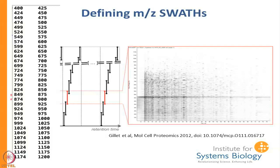This depicts in time versus M/Z space the fragment ions coming from just one swath. These are not the precursors even though the upper end of the range is the same — these are the fragment ions, and the fragment ions in any one vertical slice are likely to be related to each other. For this reason, when you make a library you actually exclude any Q3 ions that are within the swath window you initially used, simply because there is so much background.